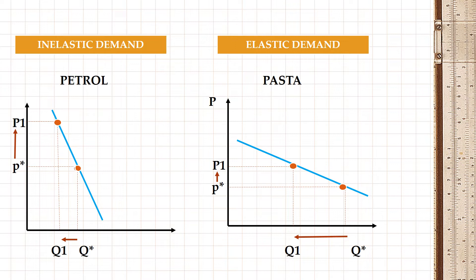For countries like Vietnam where they only eat pastas, the shape of the curve would be inelastic, but here it's elastic. Whenever the curve is elastic, the shape of the demand curve will be flat — as elasticity rises, it becomes more flat. But if the curve is inelastic, it becomes steeper.